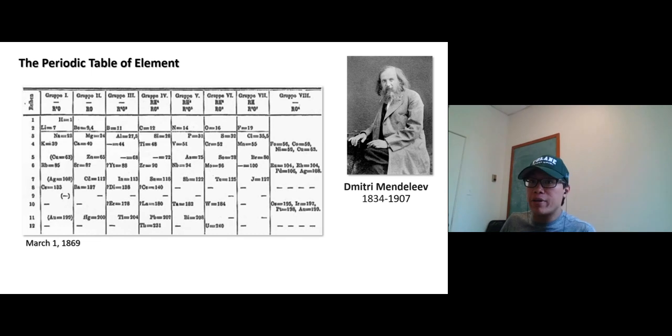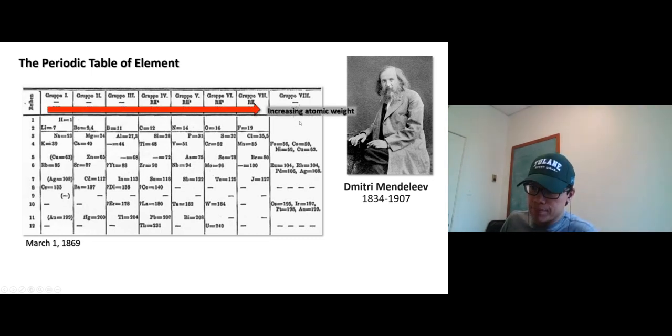Now there's some features about this periodic table that we're going to talk about today. If you look at the number of each element, we have hydrogen, lithium, beryllium, boron, carbon, nitrogen, oxygen, fluoride. These are what we're familiar with. The elements in this table are arranged by increasing atomic weight: 1, 7, 9.4, 11, 12, 14, 16, and 19, and so on.